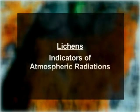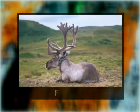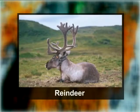Lichens are good indicators of atmospheric radiation levels because they accumulate radioactive substances from the air. For example, after the Chernobyl nuclear power plant accident, lichens in nearby countries became so radioactive that reindeer — which consumed lichens as a major food source — became unfit for human use as food or in milk production.